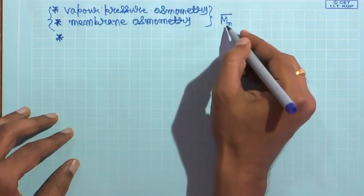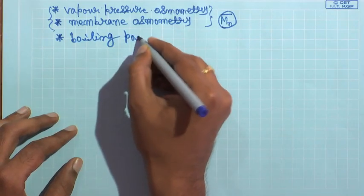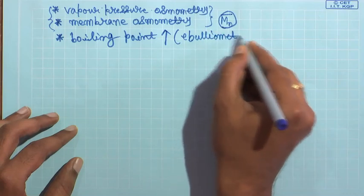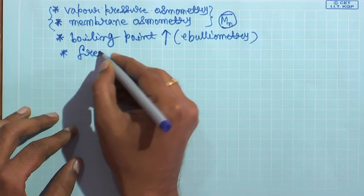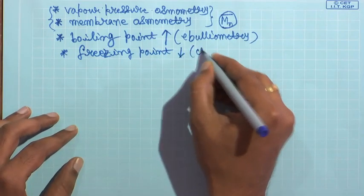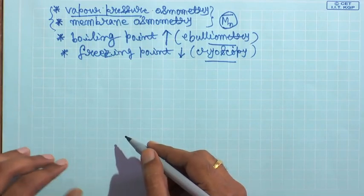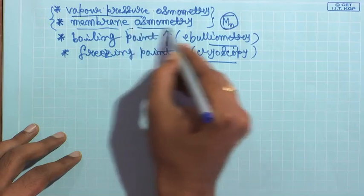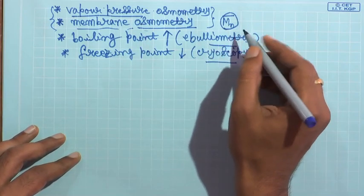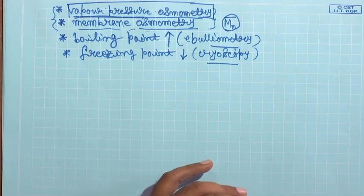There are different ways to determine this value of Mn. You can look at boiling point elevation, which is called ebulliometry, or freezing point depression — cryoscopy — or you can look at the vapour pressure change, or you could have membrane osmometry. Let us talk about vapour pressure osmometry to start with.